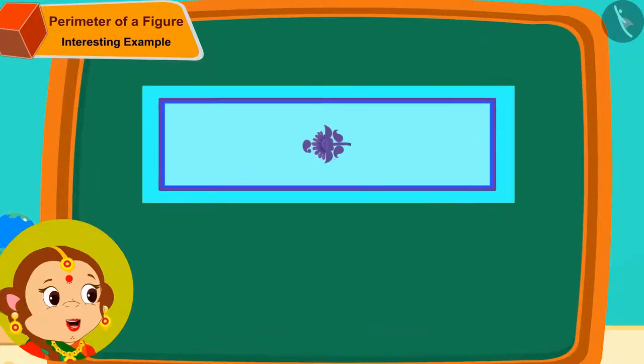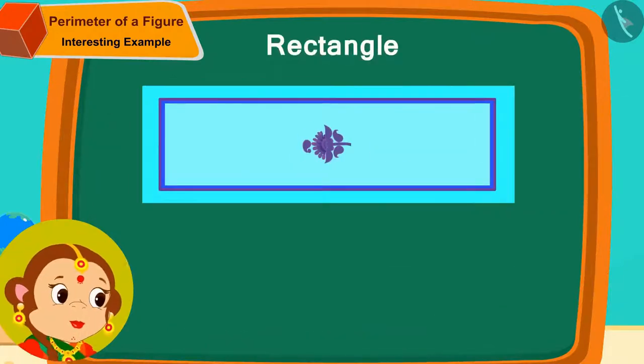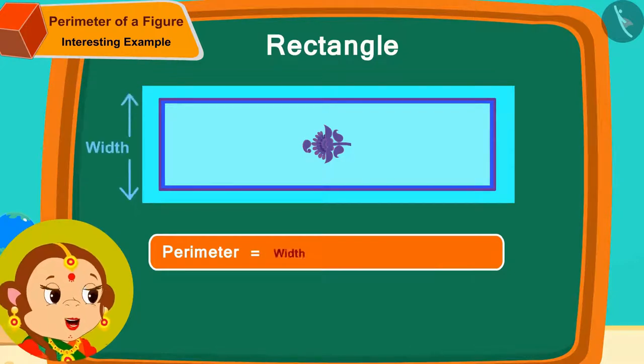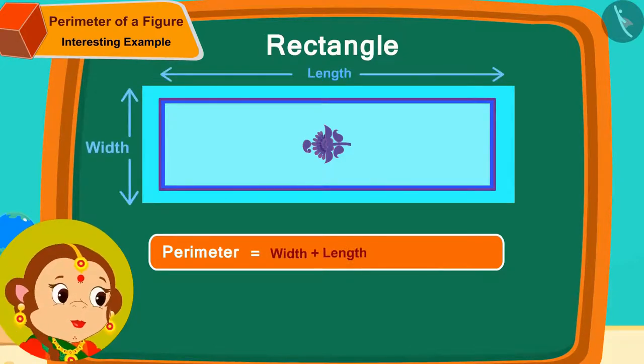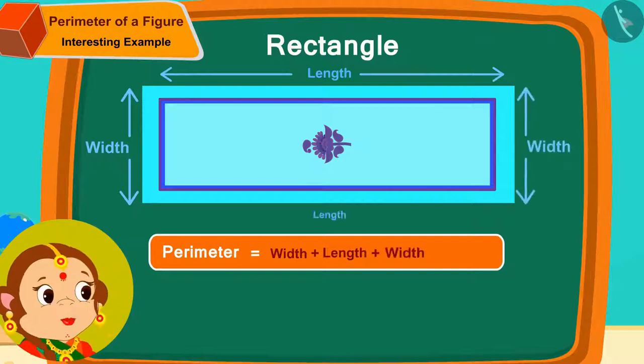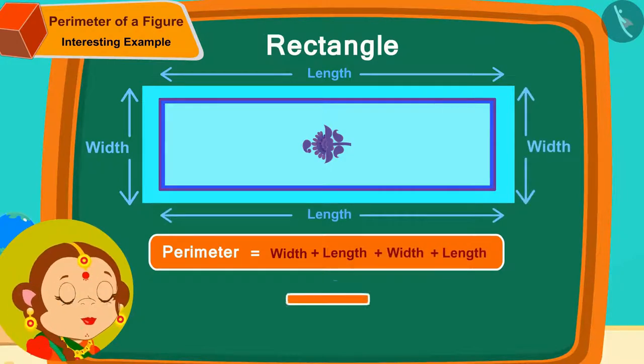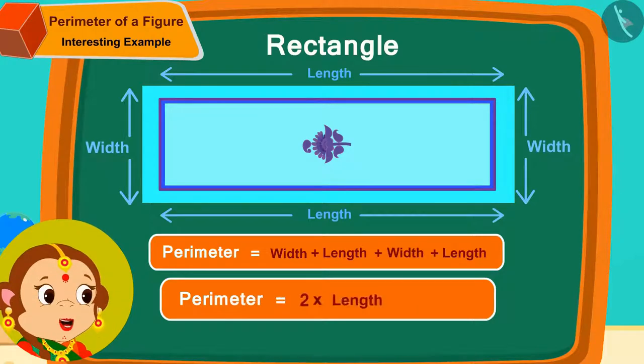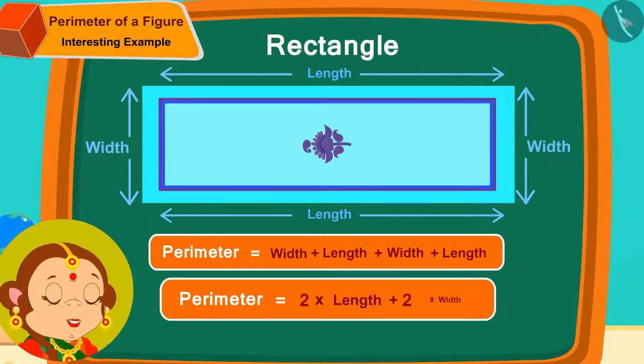The sheet is rectangular in shape. So, in order to find its perimeter, I will need to add the width to the length and then add the width to the length once more. In other words, its perimeter will be 2 times the length plus 2 times the width.